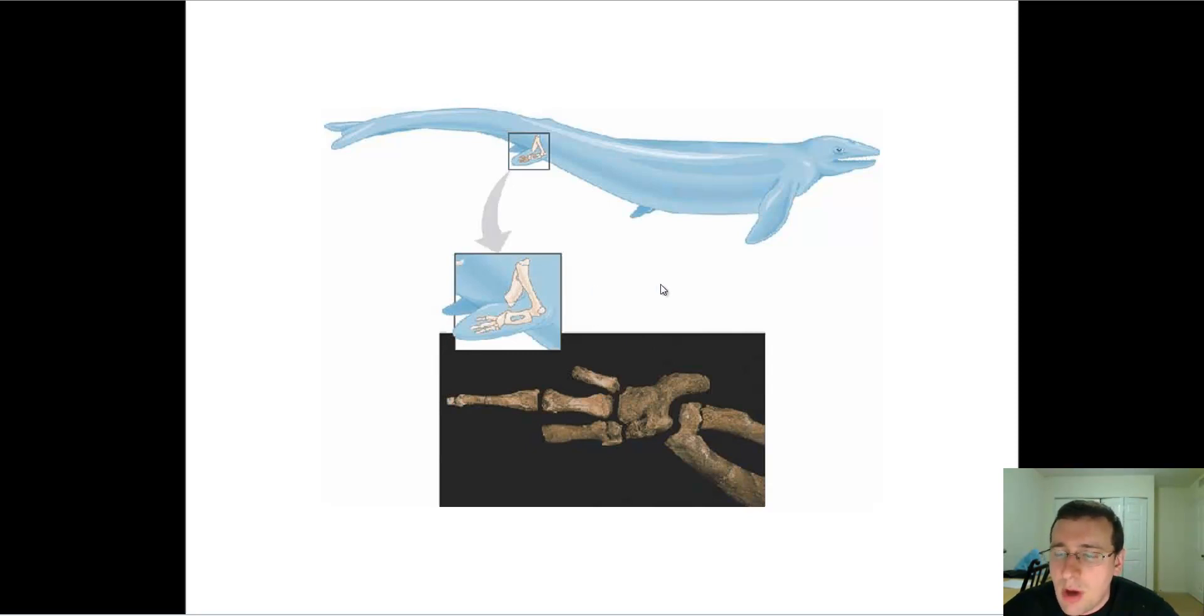That is what we call a homologous structure or a similar structure in a different organism that indicates common ancestry with an organism that has that similar structure. And in this case, it's indicating that this particular animal may have been a transition animal between the mammals that evolved on land and the mammals that we see today in the water.